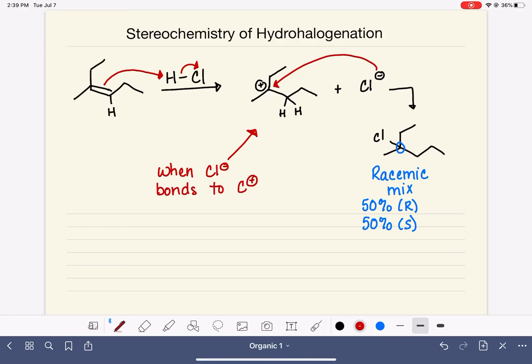it can approach or attack that C positive from either the top of the molecule or the bottom of the molecule. The bond can be formed from either the top or the bottom. Both situations are equally likely, which results in our racemic mix.